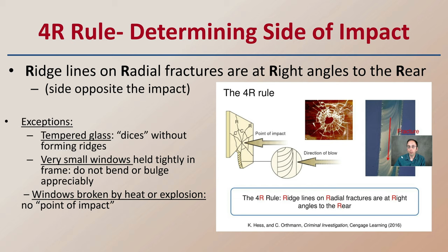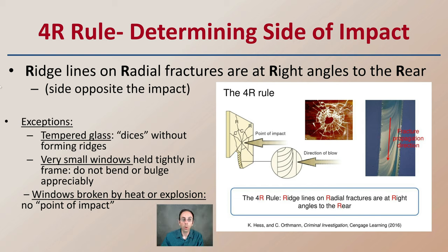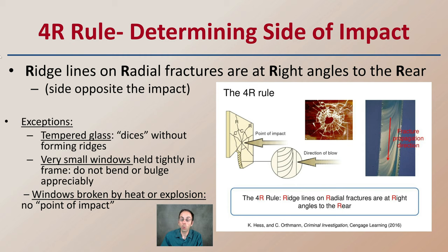That's the four rule for determining the side of impact. The key term here is that ridge lines on radial fractures are at right angles to the rear, or the side opposite the impact. Looking closely, you can see the fracture propagation direction. There are exceptions to this rule: tempered glass, which dices without forming these ridges because of the way it's made; very small windows held tightly in a frame that do not bend or bulge much; and windows broken by heat or explosion, which have no point of impact and cannot have this rule applied.